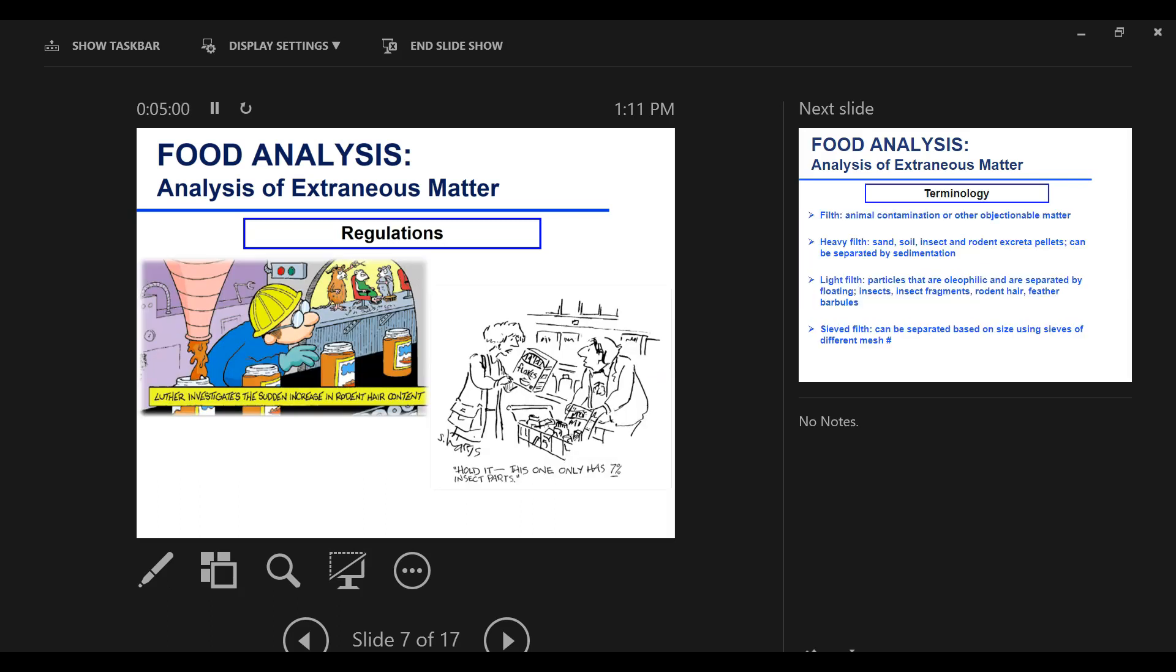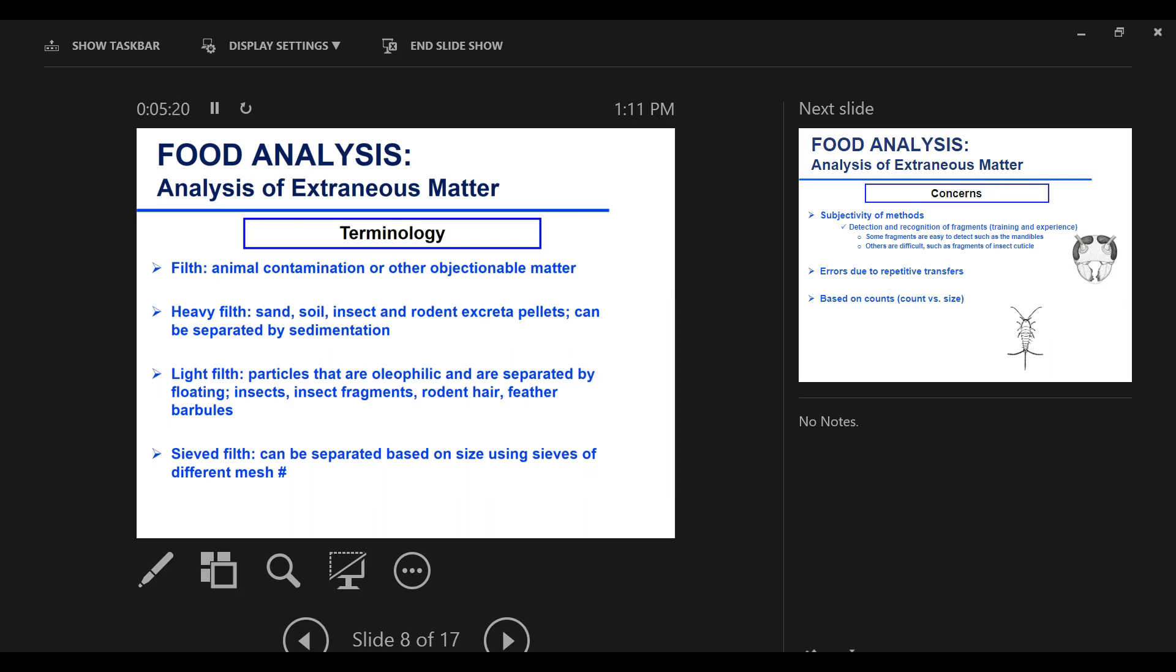This is just a joke here. Terminology that we usually hear and see in this capacity: we have silt. Silt includes animal contamination or any other objectionable matter. This is kind of an overarching label. There is heavy silt and light silt. Heavy silt includes sand, soil, stones.